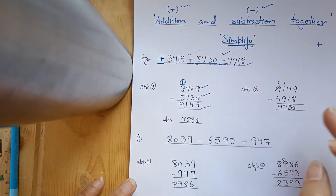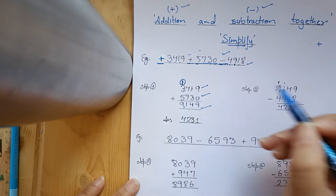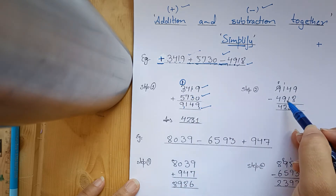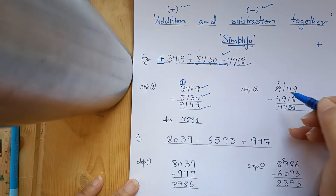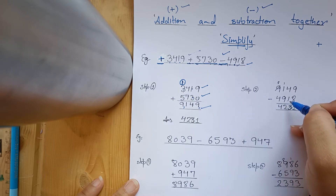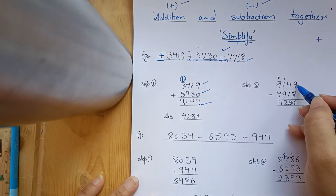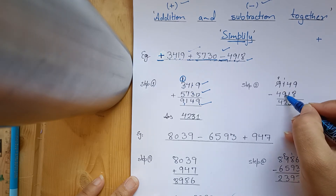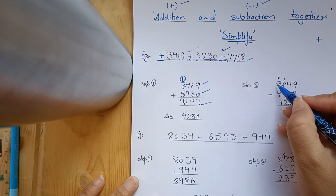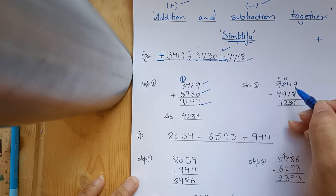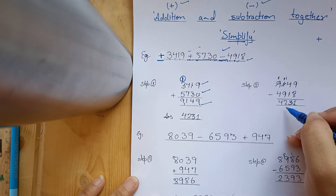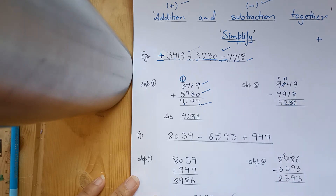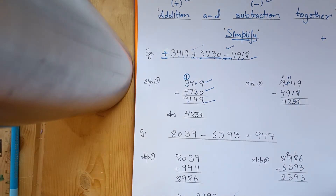After that, you see the next step. The answer has come, and now we will minus the minus number with the answer. So we minus 9,149 with 4,918. We remove 8 from 9, that's 1; from 4 is 3. Here we borrow a number, that's 11; 9 minus becomes 2; 8 from 8 is 4. So our answer is 4,231.